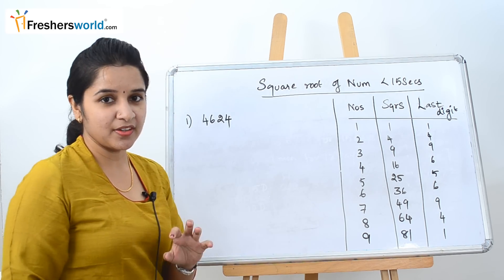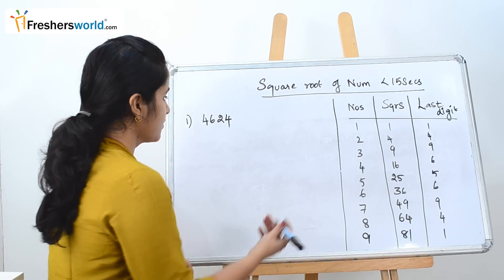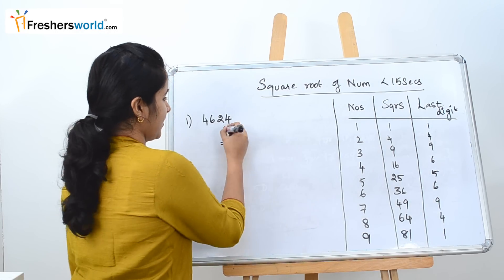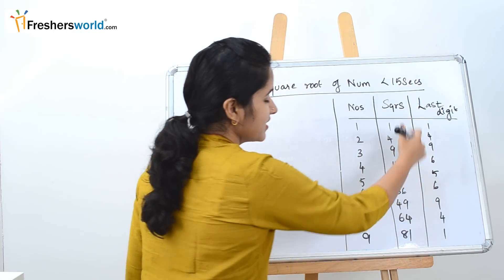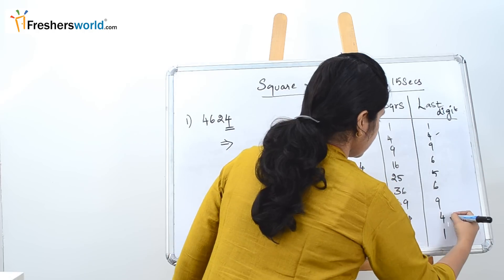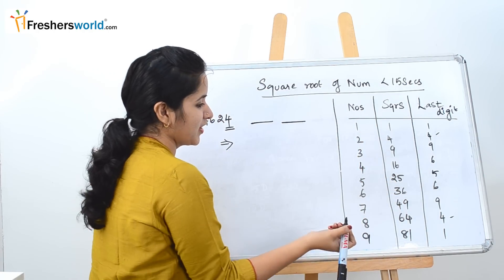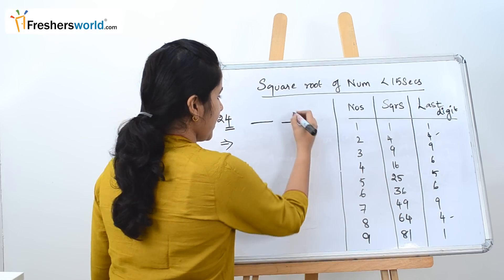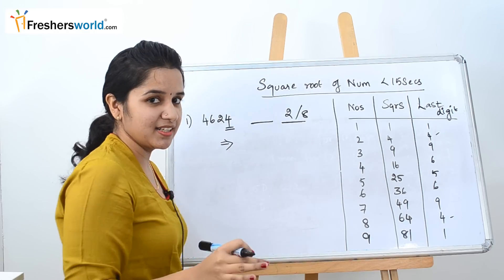The first question is: find the square root of 4624. How are we going to do it? Look at the last digit of the question, which is 4. See where 4 appears in the last digit column — it falls in two places. So we put 2 dashes and write that the answer could be 2 or 8.